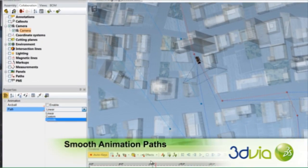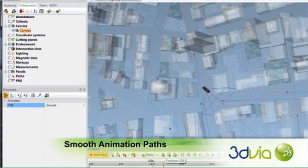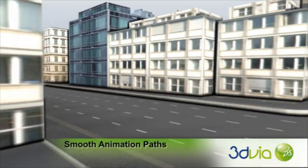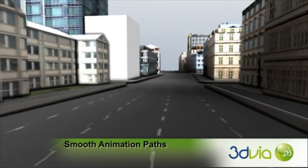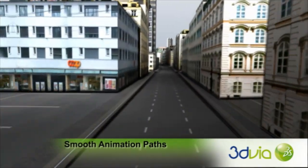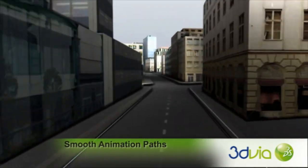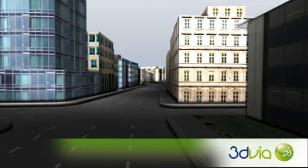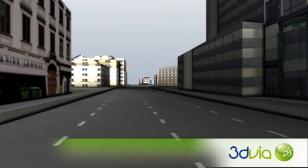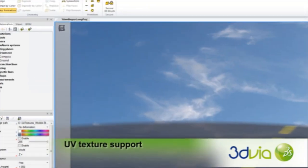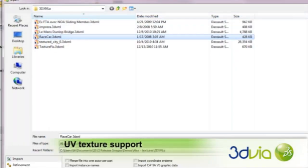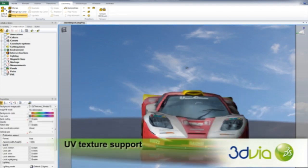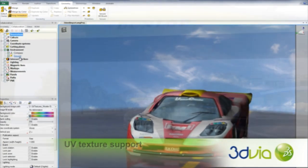Now with 3D Via Composer V6R 2012, users can create even more realistic animated camera sequences with the addition of the Smooth property for actor and camera paths. This option automatically adapts camera paths with optimized rotation and speed settings for fly-through animations that flow more naturally. Give your product geometry a truly lifelike experience with UV texture mapping support from 3D XML files to give your geometry an even more detailed and realistic feel.